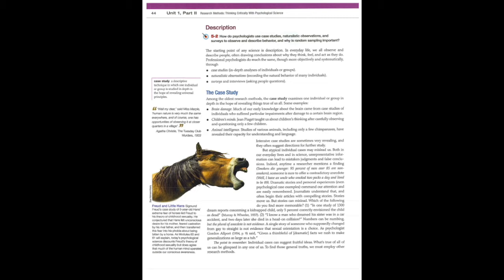The case study. Among the oldest research methods, the case study examines one individual or group in depth in the hope of revealing things true of us all. Some examples: Brain damage. Much of our early knowledge about the brain came from case studies of individuals who suffered particular impairments after damage to a certain brain region. Children's minds. Jean Piaget taught us about children's thinking after carefully observing and questioning only a few children. Animal intelligence. Studies of various animals, including only a few chimpanzees, revealed their capacity for understanding and language. Intensive case studies are sometimes very revealing, and they often suggest directions for further study.